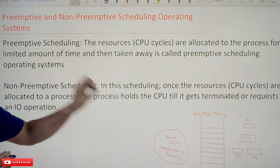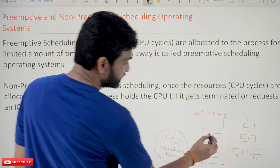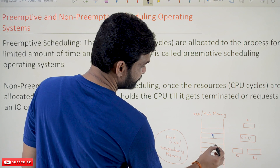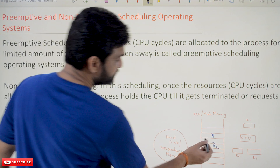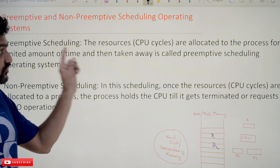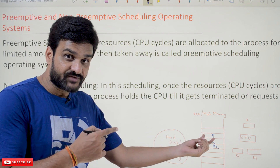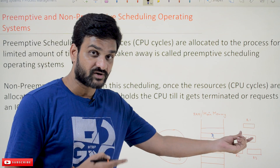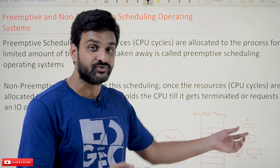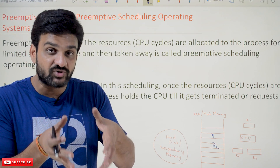Now we will try to understand these definitions using this diagram. Assume there is process P1 and process P2. If you consider a preemptive scheduled operating system, whenever a process is allocated the resources of the computer — CPU cycles — meaning the process is getting executed on the CPU, it will be allocated for a specific limited amount of time.